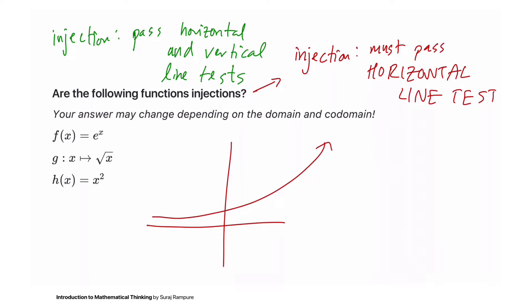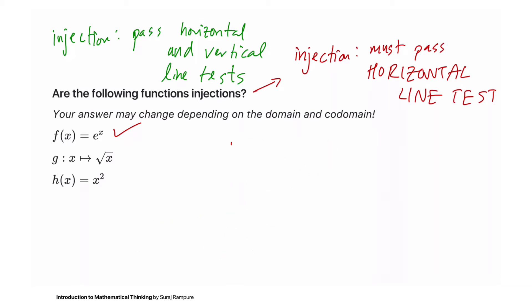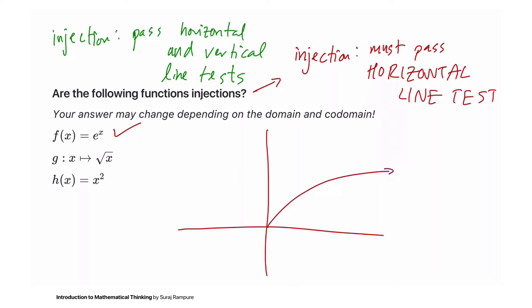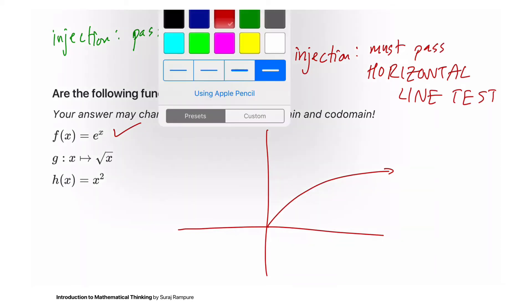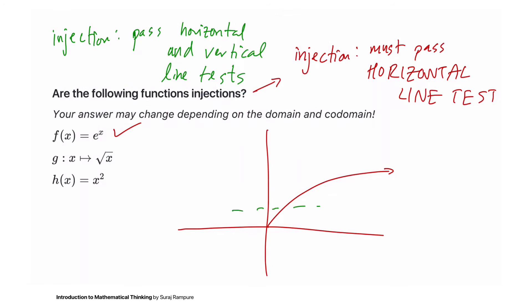What does the graph of e^x look like? Do any two inputs have the same output? No — it doesn't look like it because it's strictly increasing, so f is indeed an injection. What about g, which maps elements x to their square root? It does indeed look like an injection: it passes the vertical line test, and anywhere you draw a horizontal line it only hits one point. So g is also an injection.